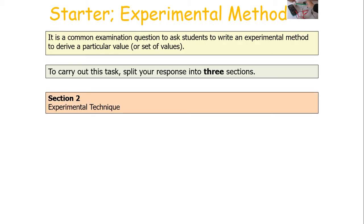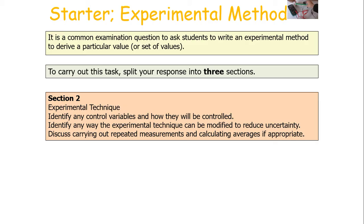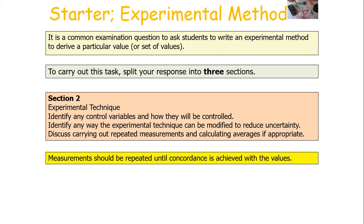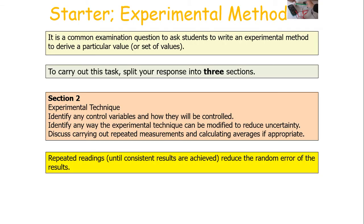The second section you want to include in your answer is experimental technique. In this section, you want to identify any control variables and how you will control them, identify any way the experimental technique can be modified to reduce the uncertainty in your measurements, and discuss carrying out repeated measurements and calculating an average if appropriate. When carrying out repeats, in science, measurements should be repeated until concordance — similar values — are achieved. Repeating readings until consistent values are achieved reduces the random error of the results.